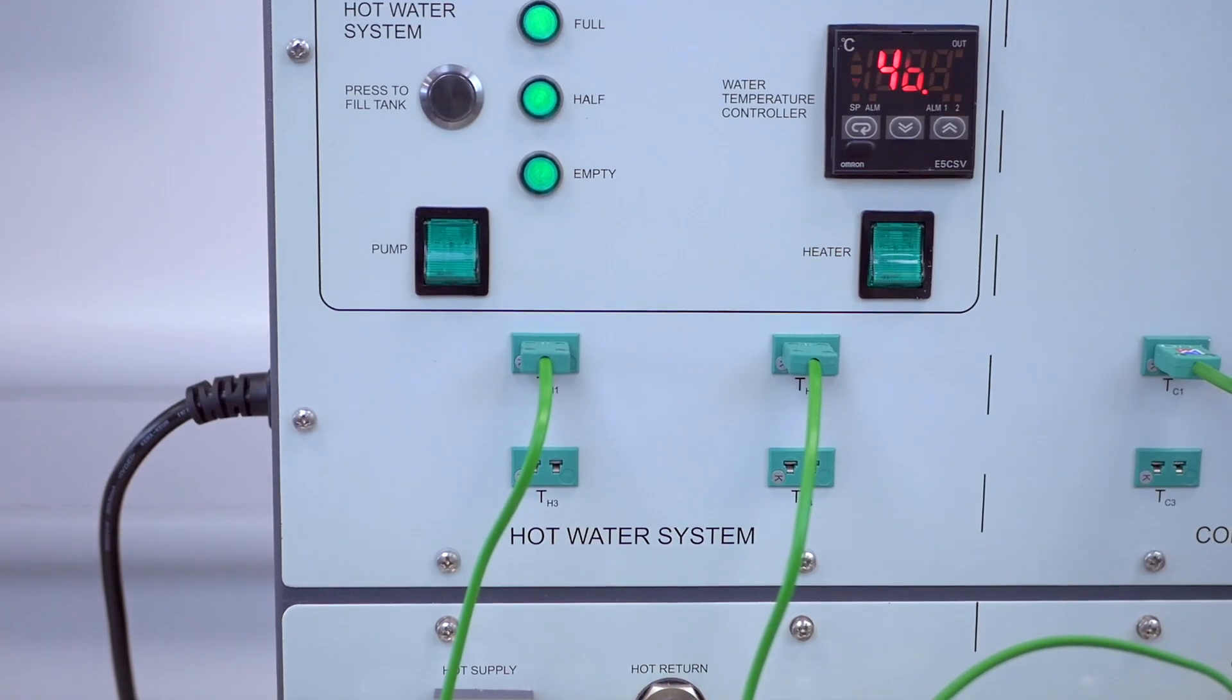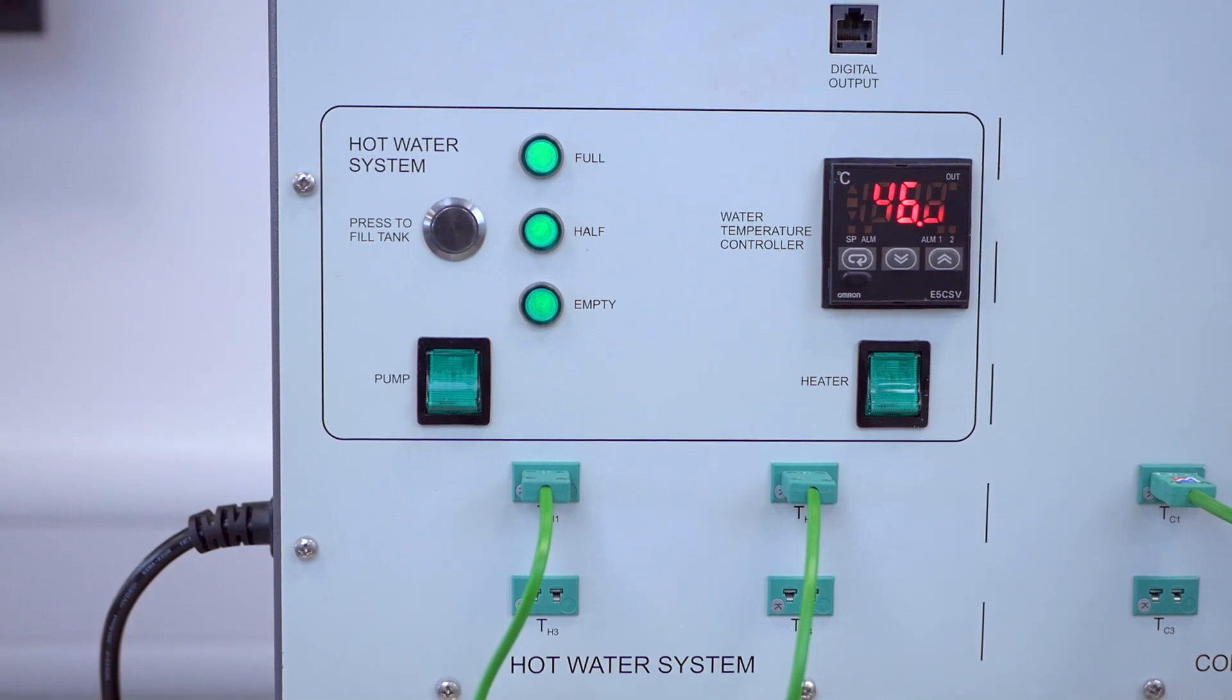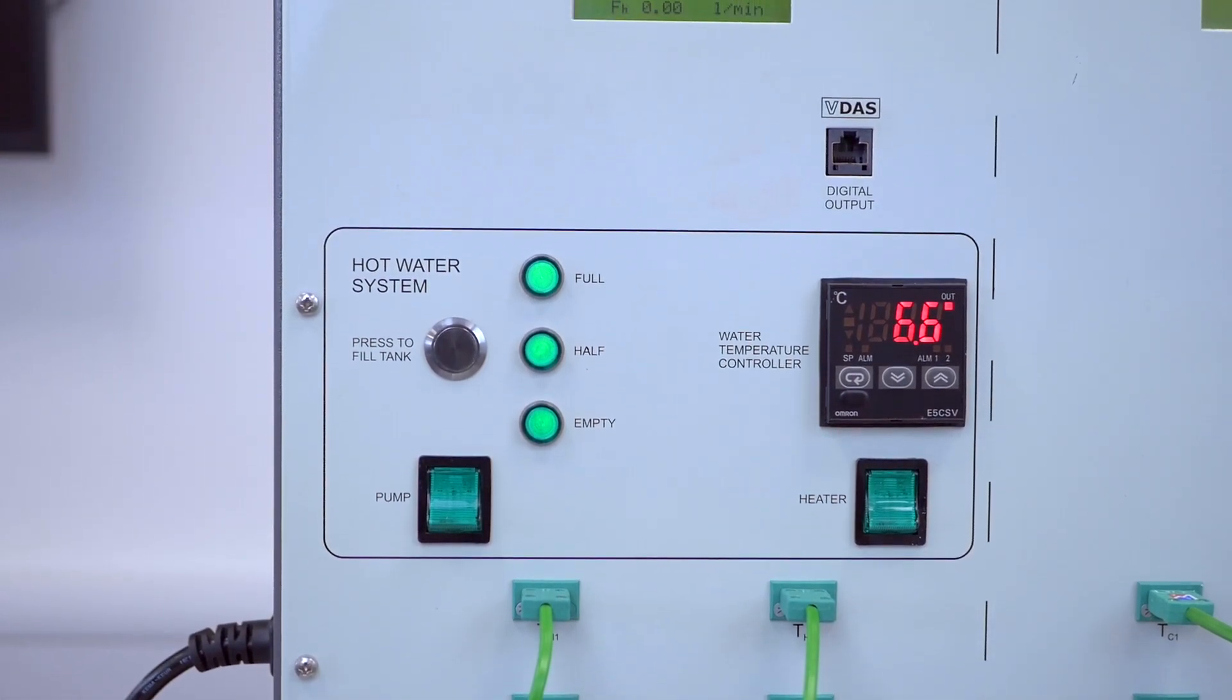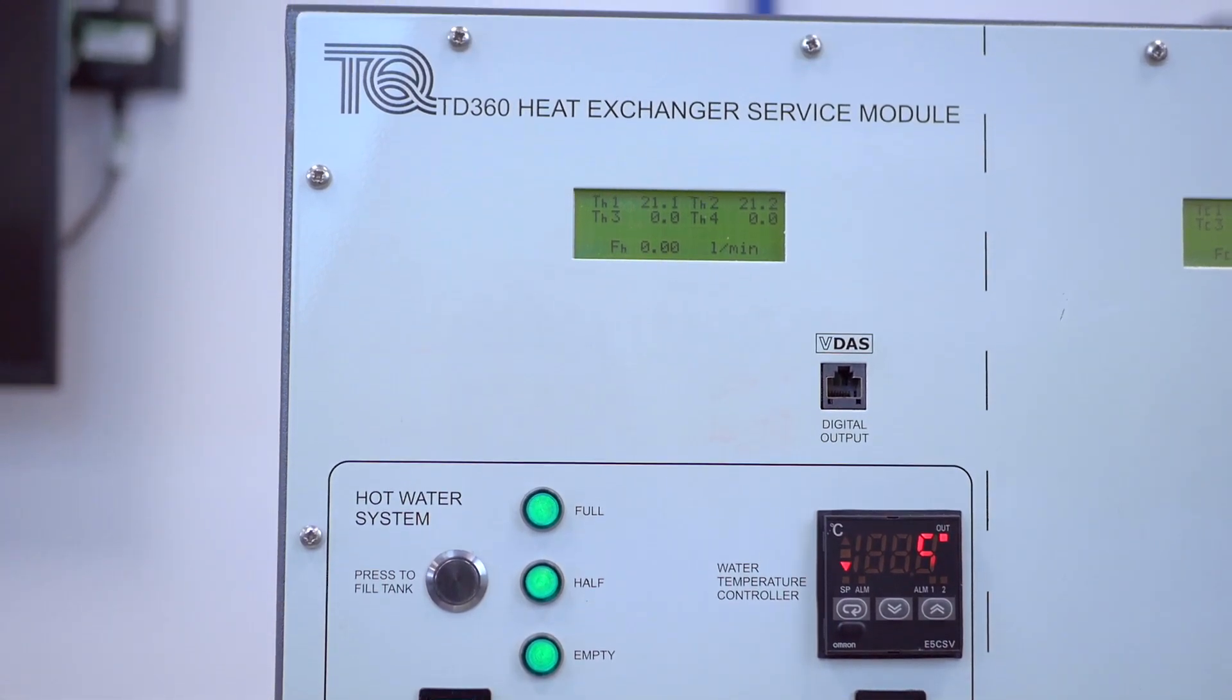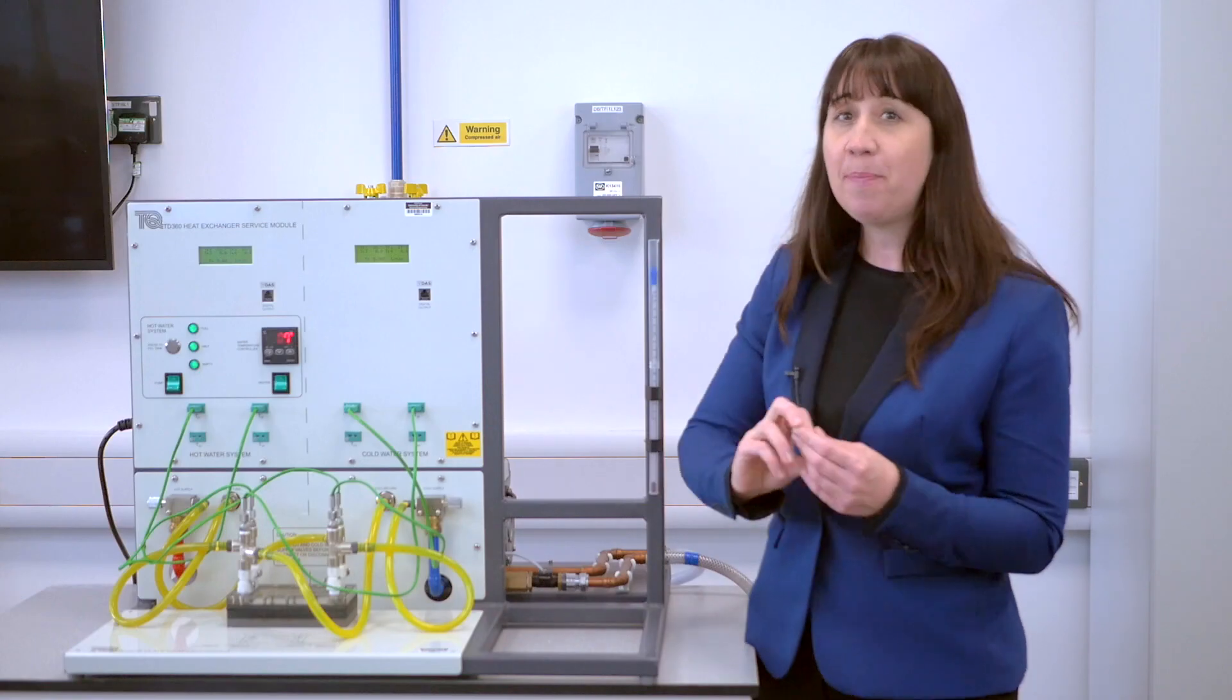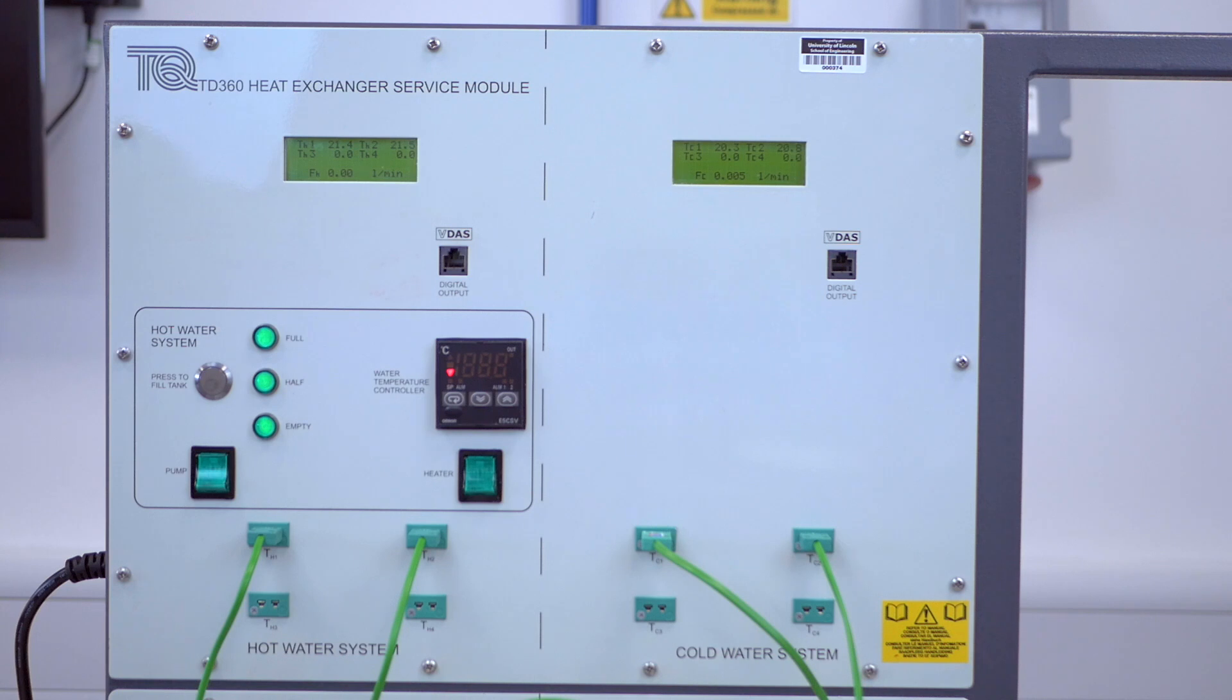The hot water has an electric heater with an adjustable controller to set the tank temperature. Inside there are float switches connected to indicators to show how much water is in the tank. The button here contains a solenoid valve which allows you to fill the tank from a cold water supply.